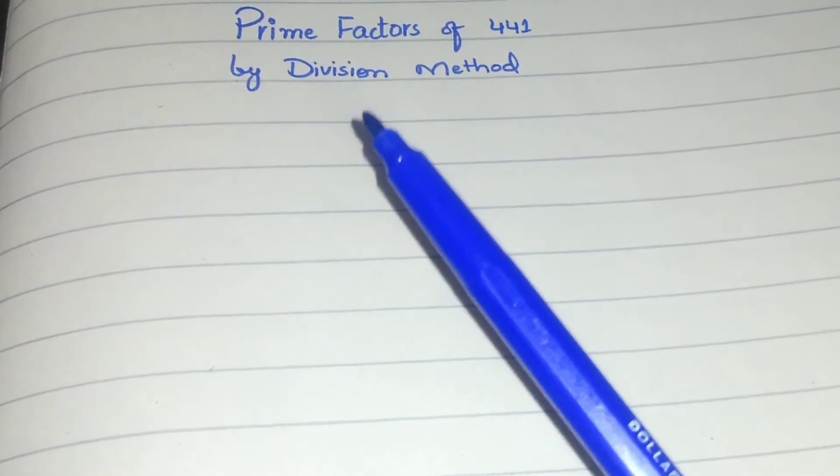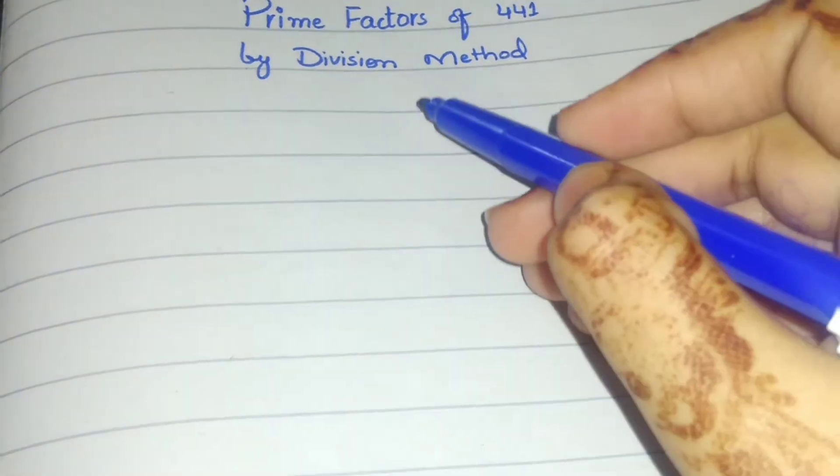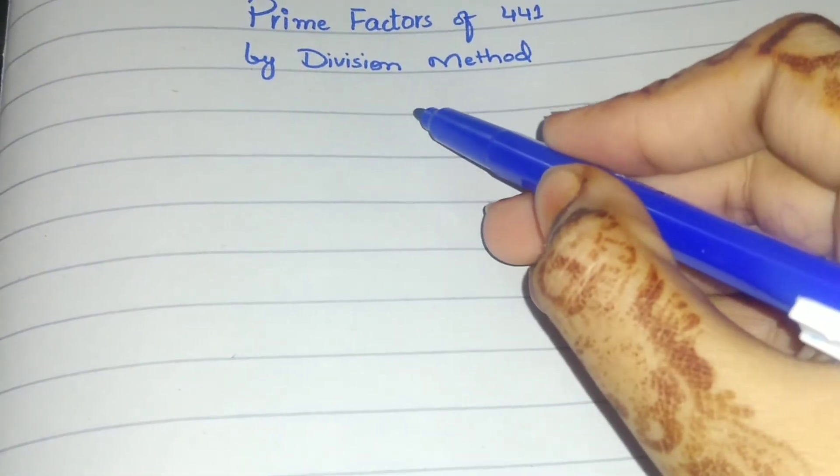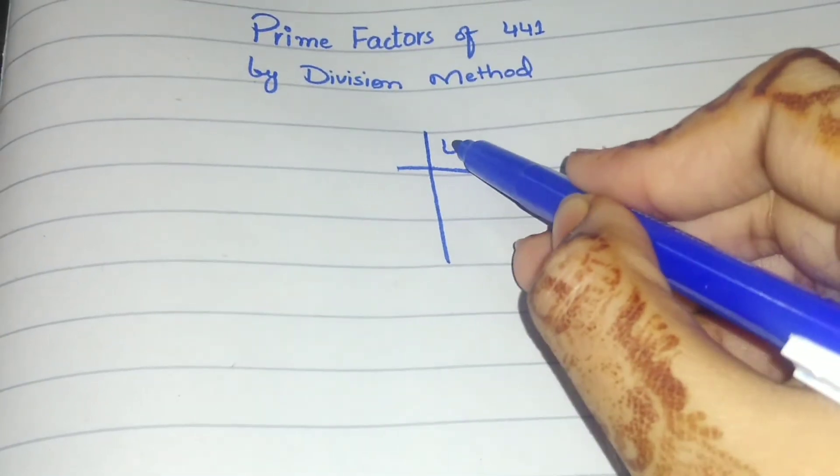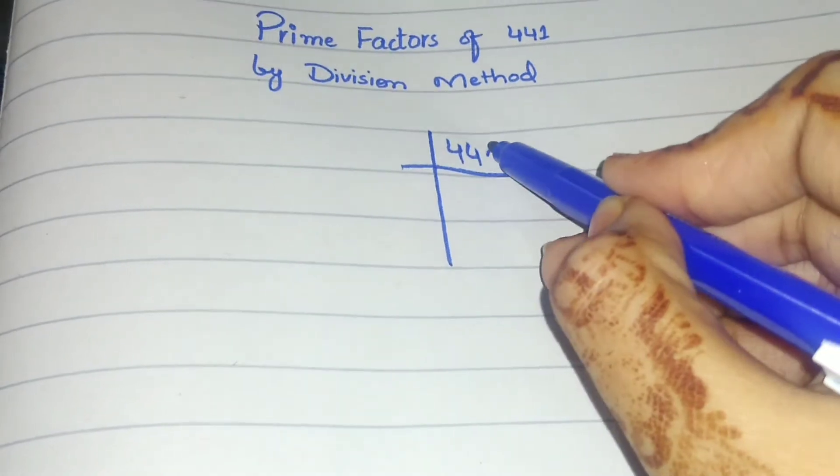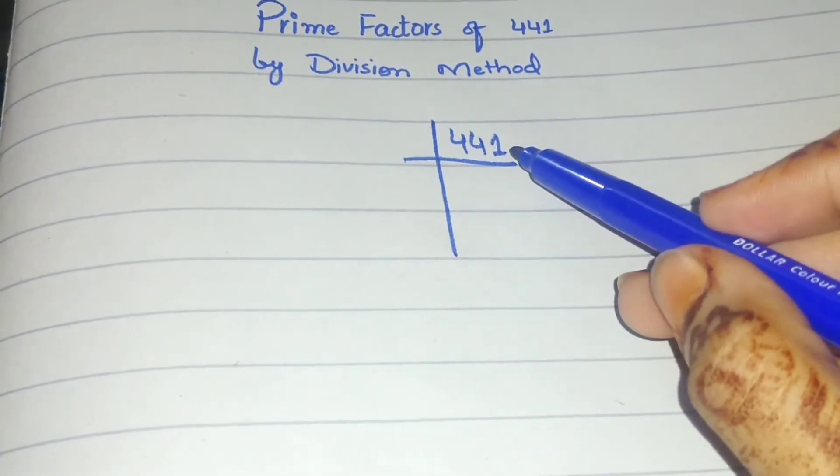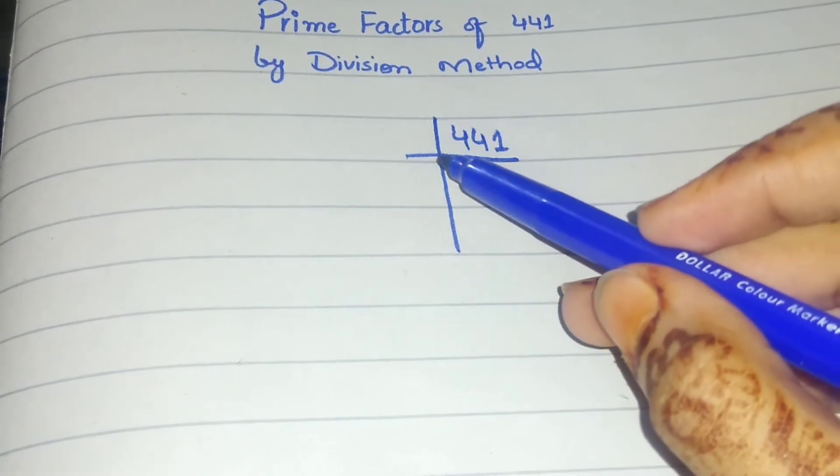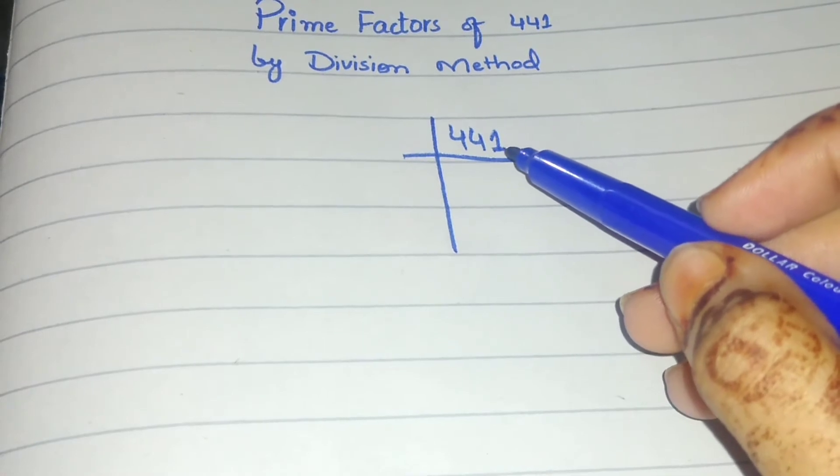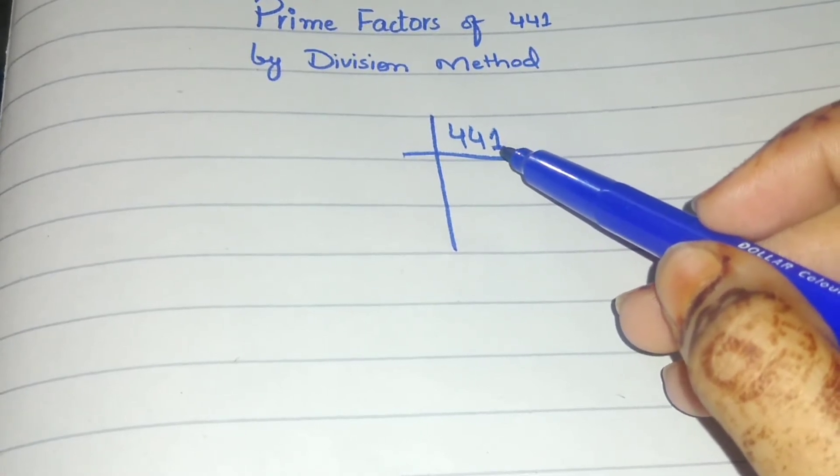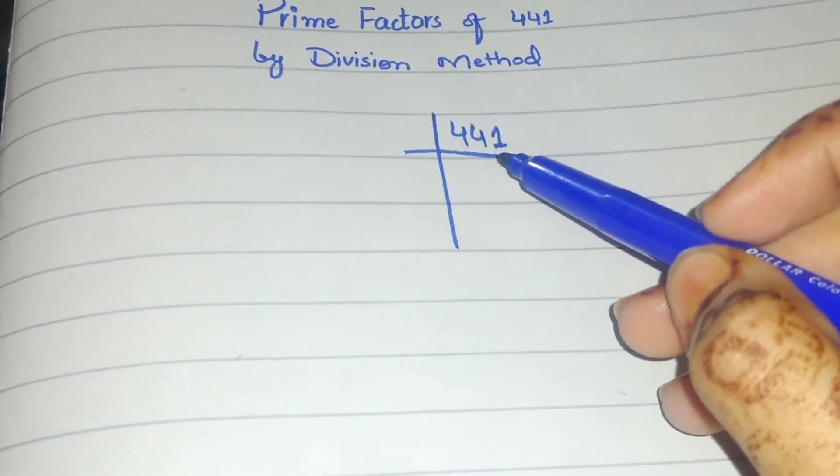So let's start our video. 441. We need to divide this value by prime numbers. It is an odd number. It is not possible that this value can be divided by 2, the smallest prime number, because the divisibility rule says you can divide by 2 only if the number is even. But here we have 1 as the last digit.